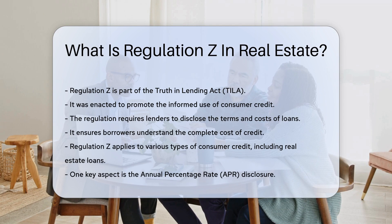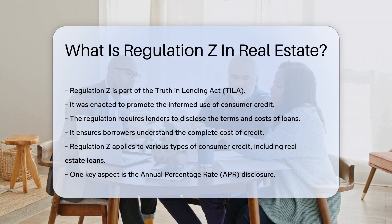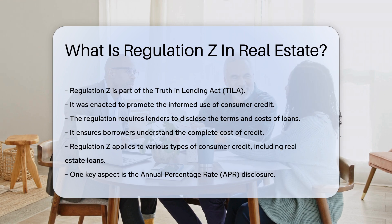This regulation requires lenders to disclose the terms and costs of loans. It ensures borrowers understand the complete cost of credit. Regulation Z applies to various types of consumer credit, including real estate loans.